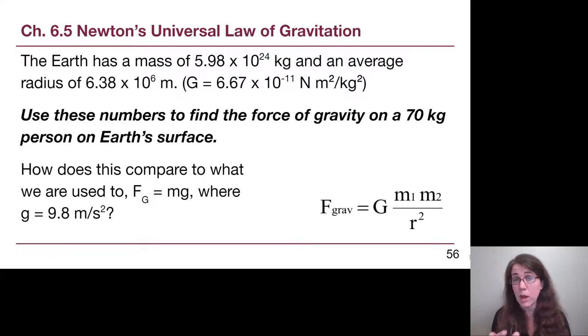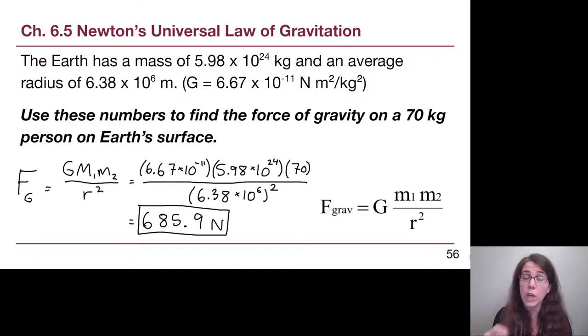So, I'm going to bring up the answer in just a second. But if you have a result, if you pause the video and have a result, also do the simpler chapter 4 idea of this person's mass, 70 kilograms times g, 9.8, and we will get 686 newtons. When we plug in the more complex numbers, lots of scientific notation, lots more stuff to multiply together, we get 685.9 newtons, which, to three significant digits, rounds to the exact same value that we were using all throughout chapters 4 and 5.